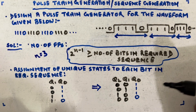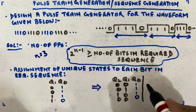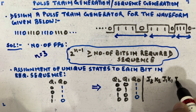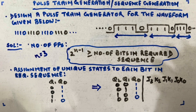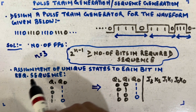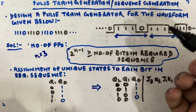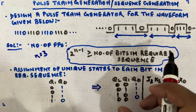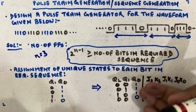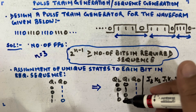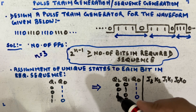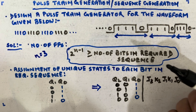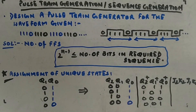After state assignment, we move to the excitation table using JK flip-flops for this synchronous counter. We have Q2, Q1, Q0, with inputs J2 K2, J1 K1, J0 K0. The JK excitation table entries are: present state to next state mapping gives J K as: 0→0: 0×, 0→1: 1×, 1→0: ×1, 1→1: ×0.